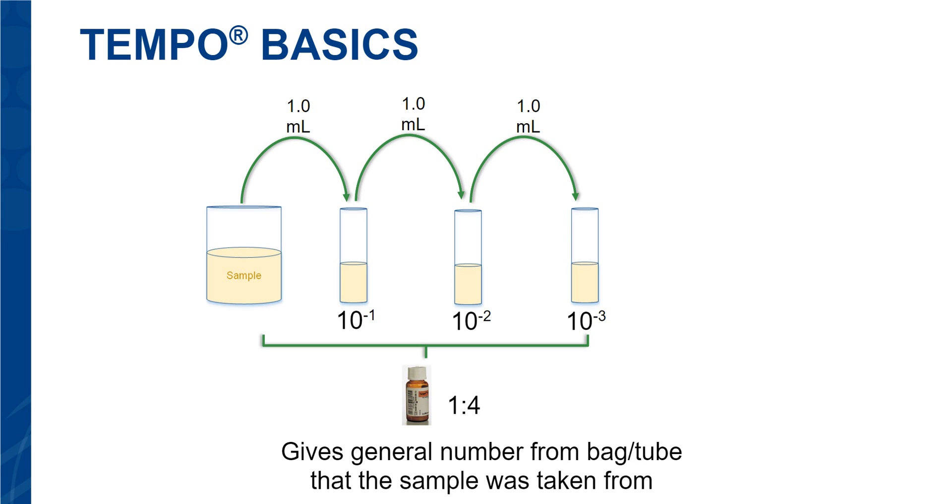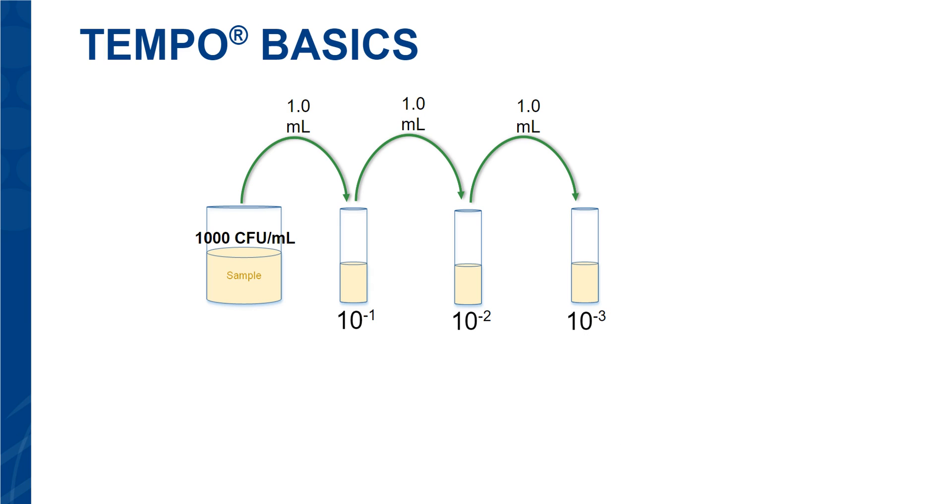For example, if the original sample in this slide has 1,000 colony forming units, the first tube over will have 100 colony forming units. The next tube will have 10 colony forming units, and the last tube will have 1 colony forming unit approximately.